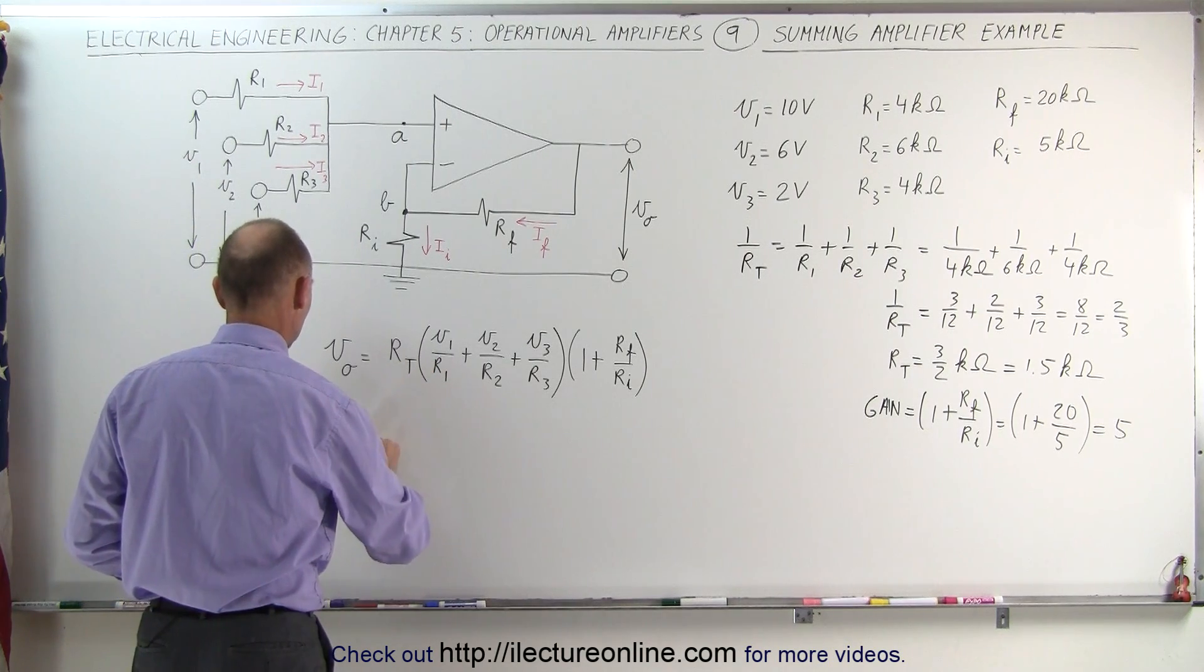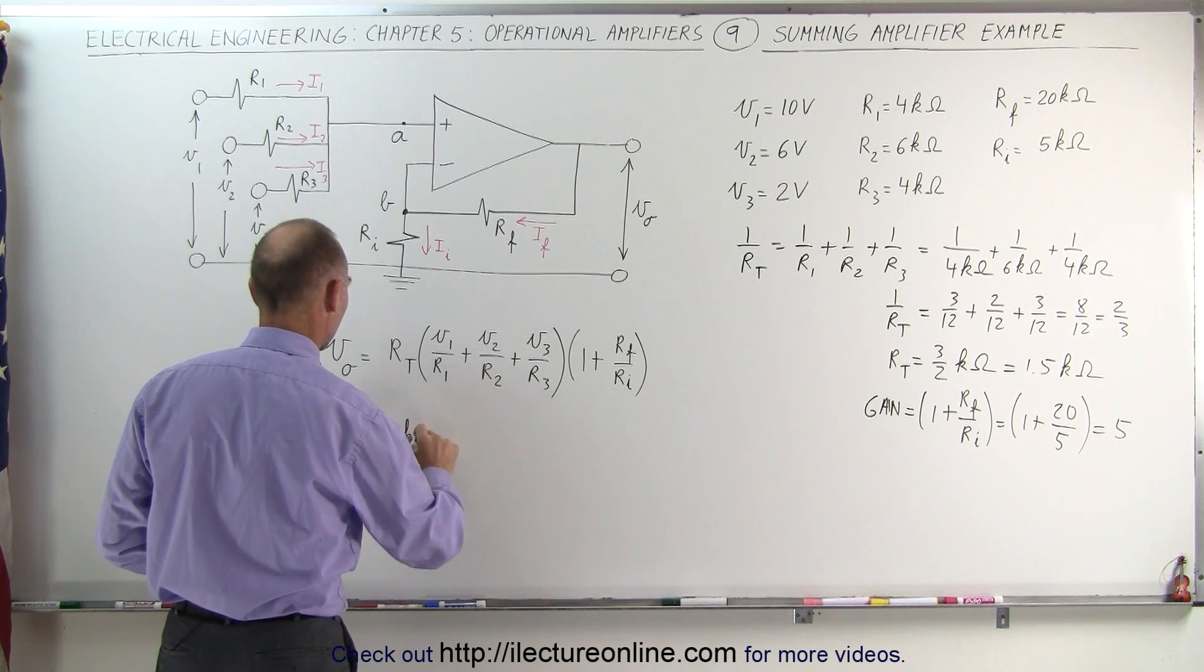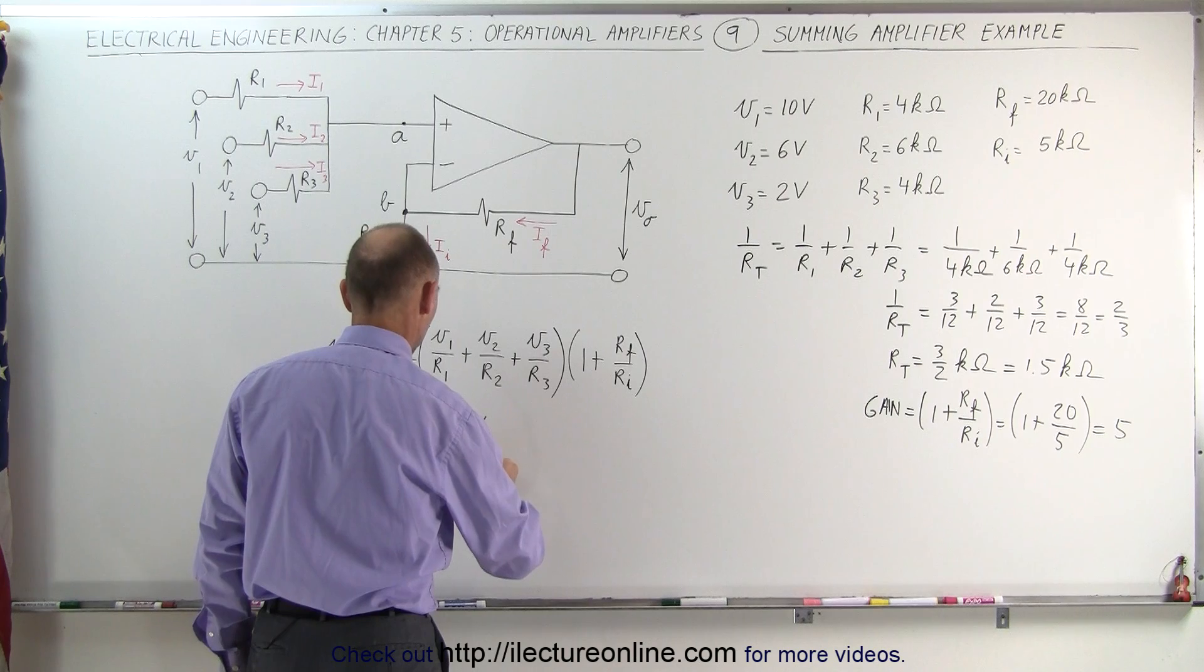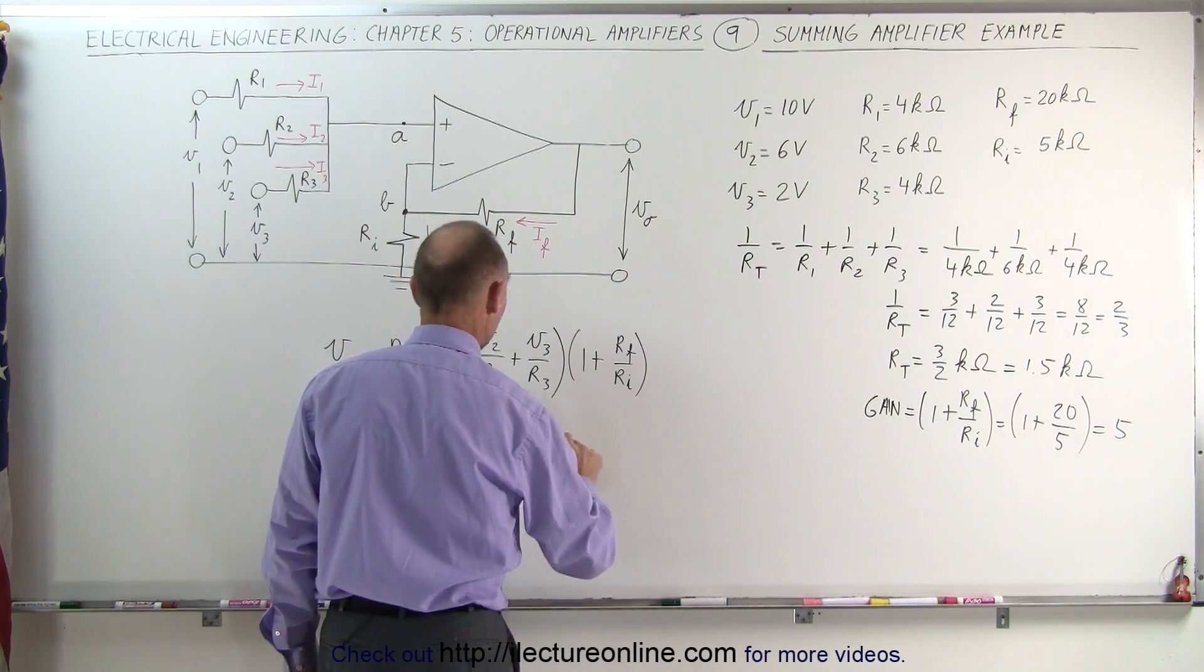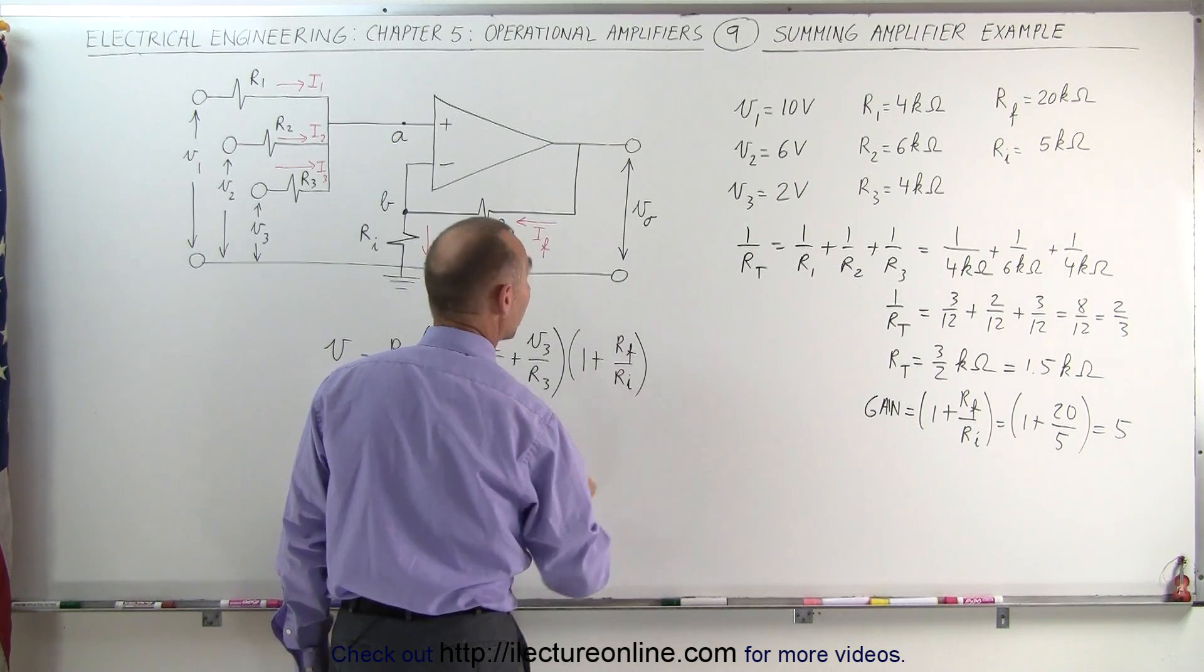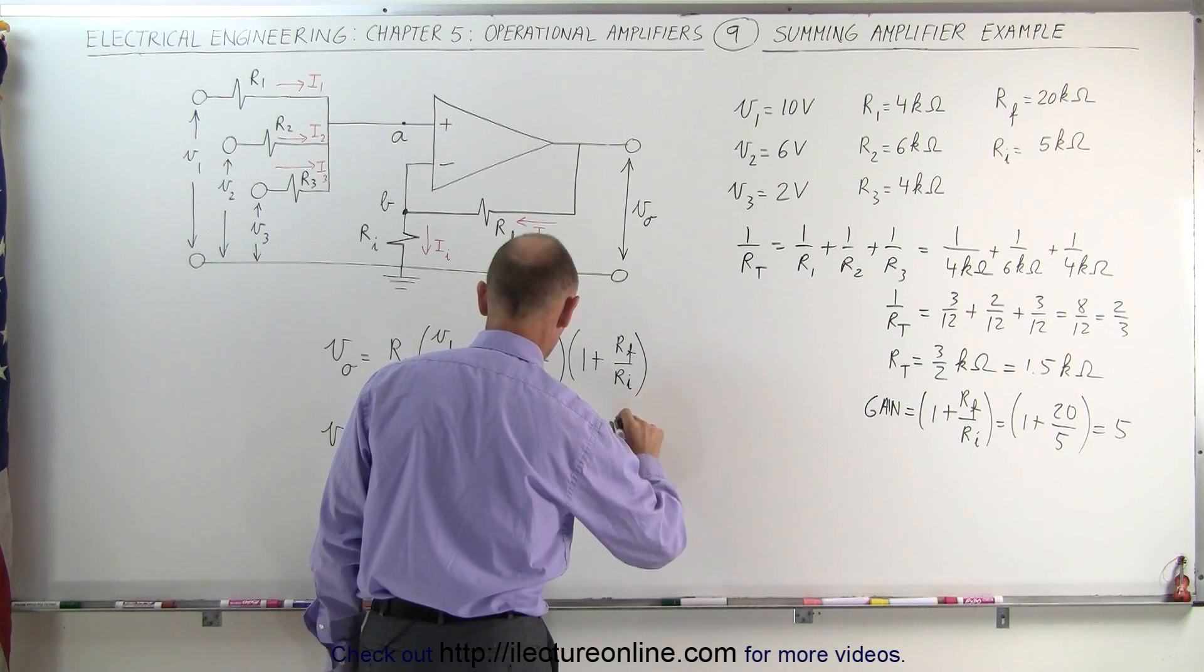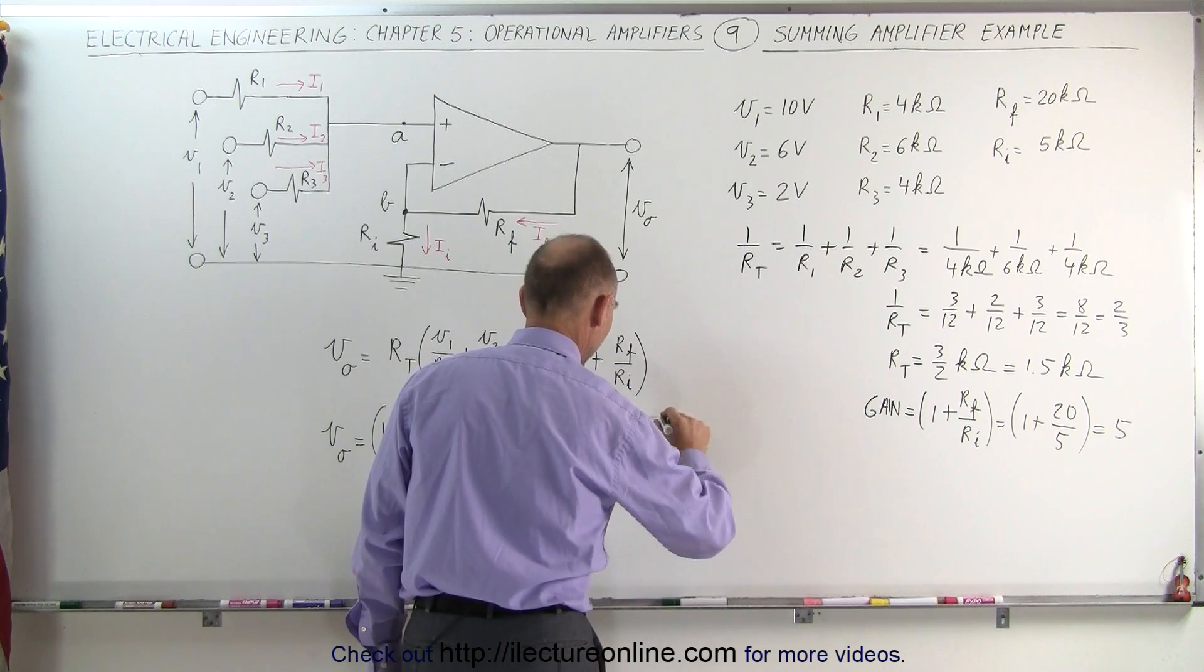The output voltage is equal to r total, which is 1.5 k ohms, multiplied times V1, which is 10 volts, divided by r1, which is 4 k ohms, plus V2, which is 6 volts, divided by 6 k ohms, plus 2 volts, divided by 4 k ohms. And that, oh, not equals to, because I still have the gain, a gain of 5.